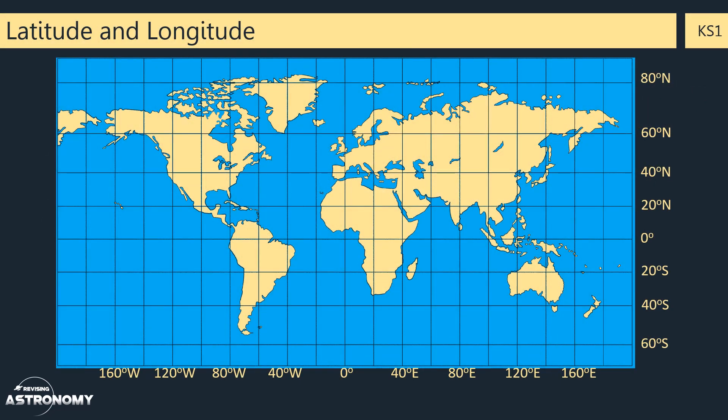In this video, you're going to be able to work out the latitude and longitude of any location on Earth. Latitude is a measure of your angular distance north or south of the equator, and we usually measure it in degrees and minutes.